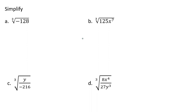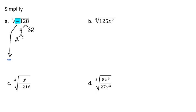In our first example, we have the cube root of negative 128. What we're going to do is take our negative sign and bring it down to the front of our answer. Then we're going to take our 128 and break it down using a factor tree. So I'm going to use the number 4. 128 divided by 4 is 32. 4 breaks down to a 2, which is prime, times 2, which is also prime.